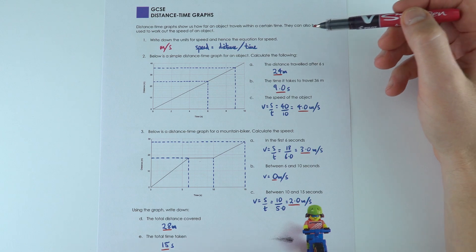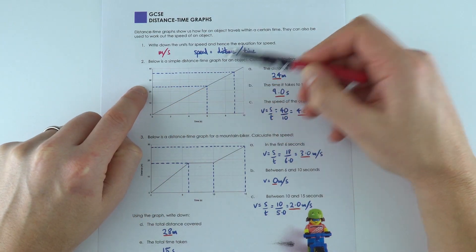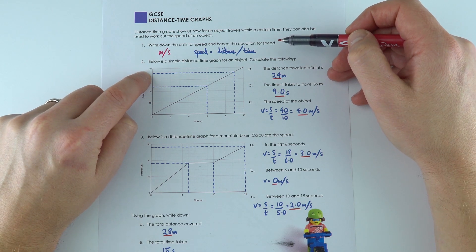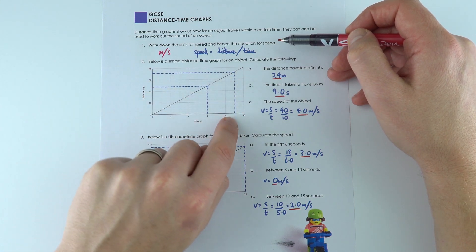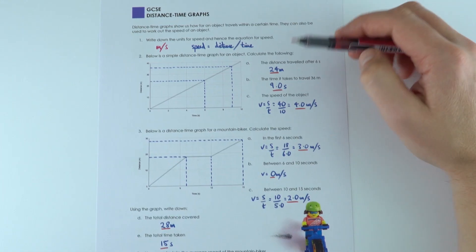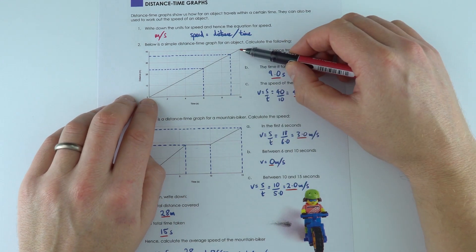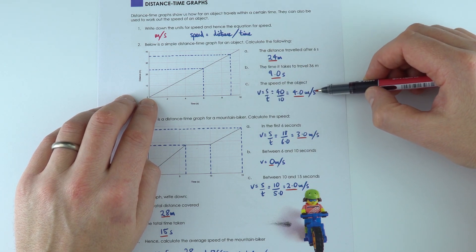For the first one, all I did was after six seconds I read off the fact that this was 24 meters, and the time it takes to go 36 meters, again being careful with my axes—I know they're quite small—but 36 is about 9 seconds. That means the speed is distance over time. I'm using the biggest distance of 40 meters over a time of 10 seconds to get 4 meters per second.